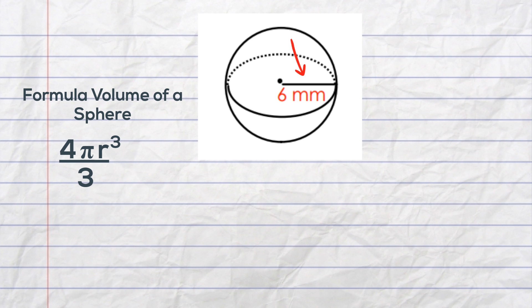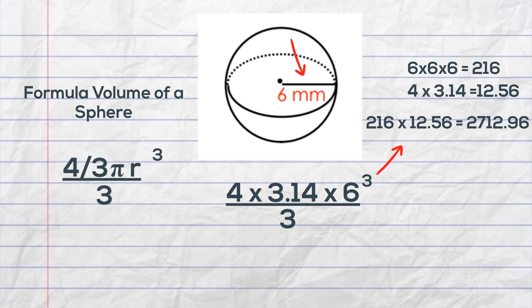I will have 4 times 3.14 which I will use for pi times 6 cubed all over 3 and when I multiply that that gives me 2712.96 divided by 3.